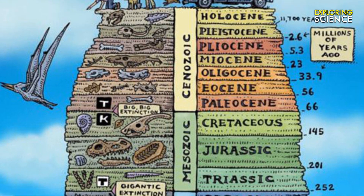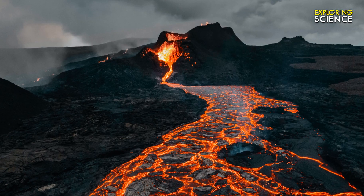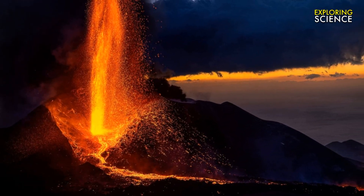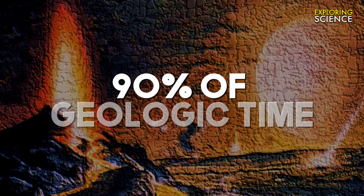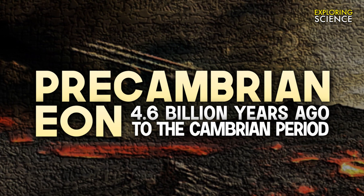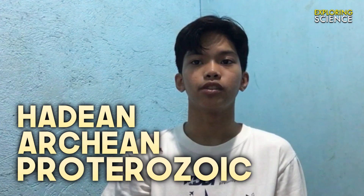Now we will explore all of this one by one. Major volcanic events altering the Earth's environment and causing extinctions may have occurred 10 times in the past 3 billion years. The Precambrian includes approximately 90% of geologic time. It extends from 4.6 billion years ago to the beginning of the Cambrian period, and includes 3 eons: the Hadean Eon, Archean Eon, and Proterozoic Eon.